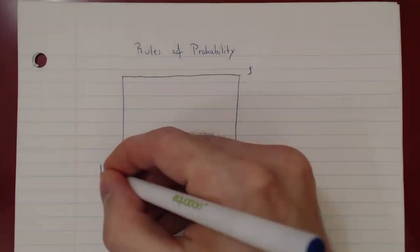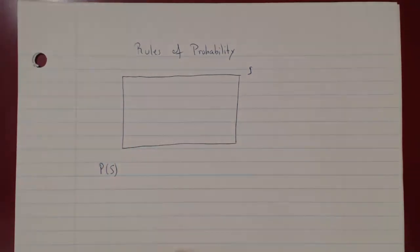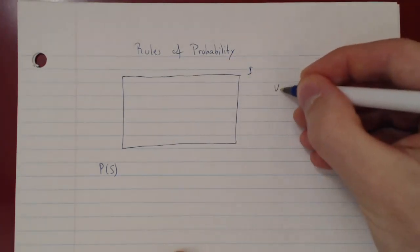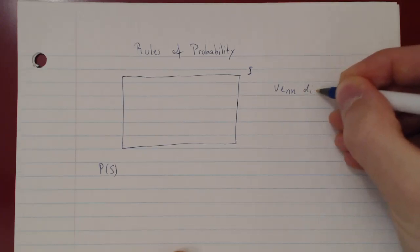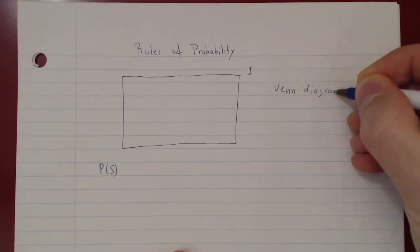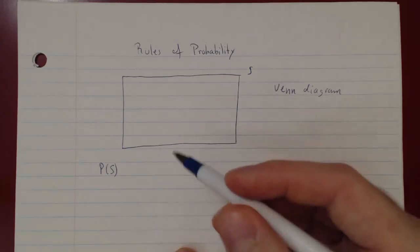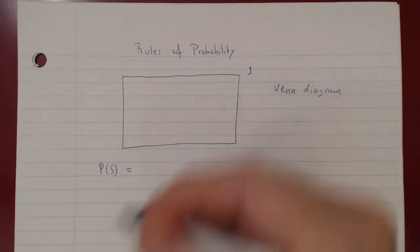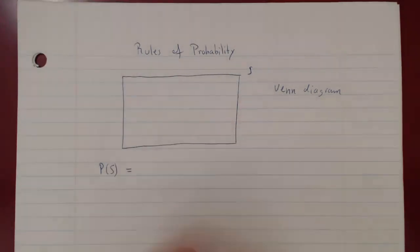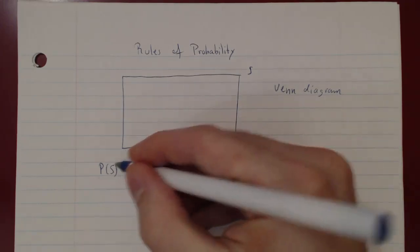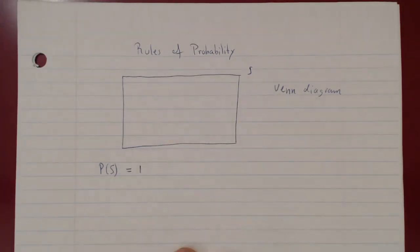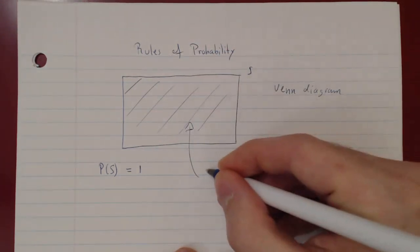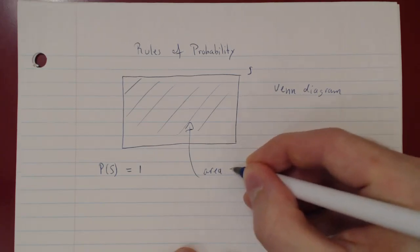So if you ask what's the probability of observing something from the sample space — the idea of a Venn diagram is that you view the area as a probability. So if you ask what's the probability of S? Since S contains all possible outcomes of an experiment, the probability of S is 1, and so the area of the rectangular region of the sample space is equal to 1.